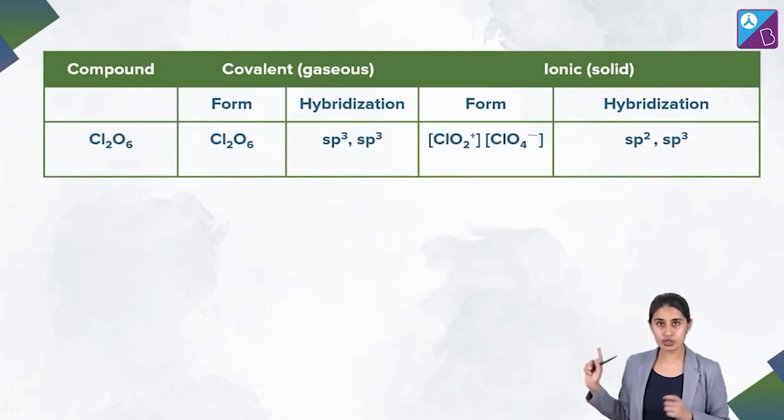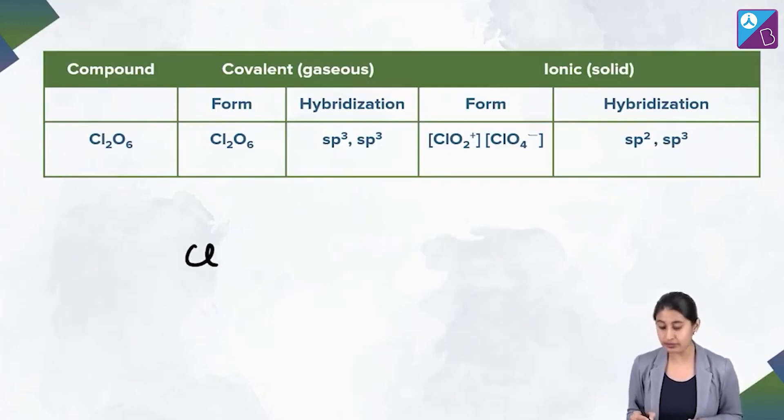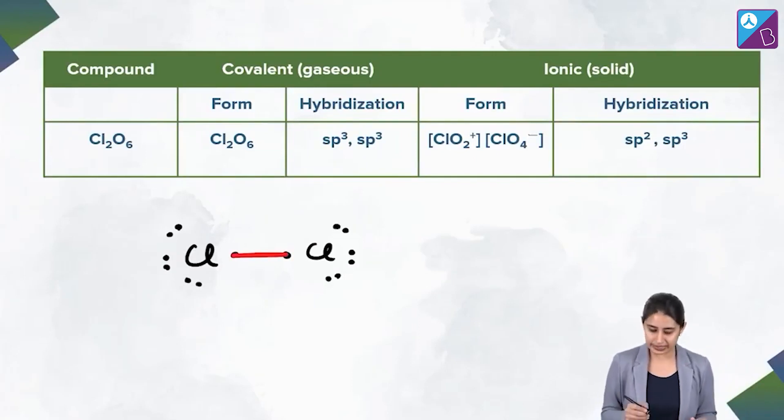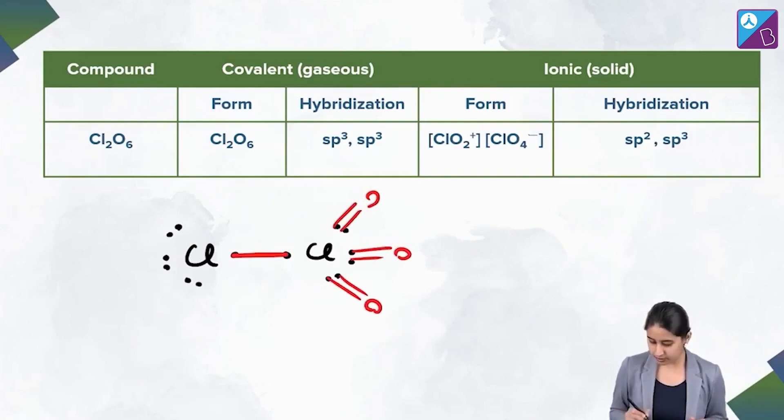So look at this, Cl2O6. The covalent form it exists as Cl2O6 only. So you know chlorine in the valence shell has seven electrons, 1, 2, 3, 4, 5, 6, 7. Similarly the other chlorine has 7, 1, 2, 3, 4, 5, 6, and 7. So there is sharing of electron between the two chlorines, and the other, the pi bonds, three pi bonds are formed with the three oxygens. Similarly three pi bonds are formed here and three sigma bonds.